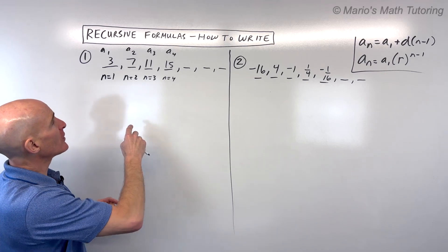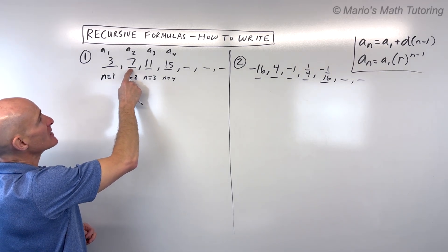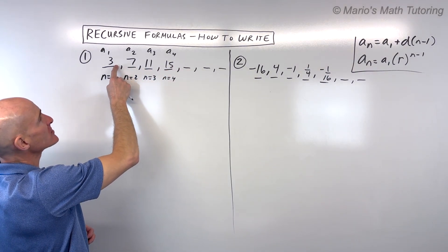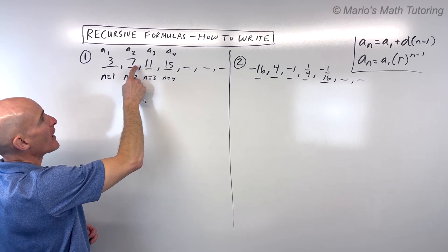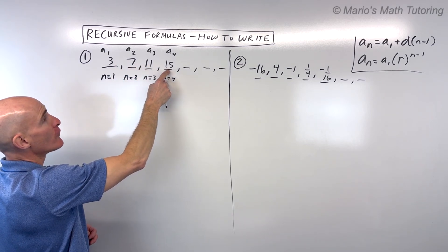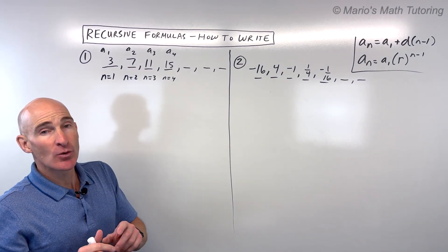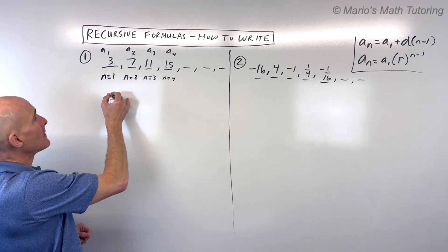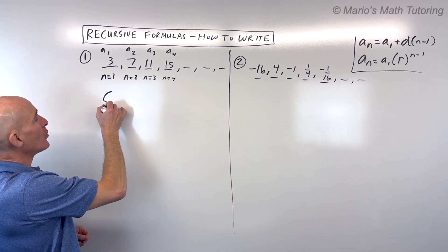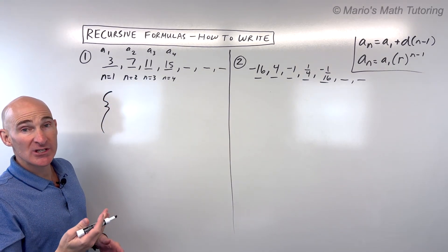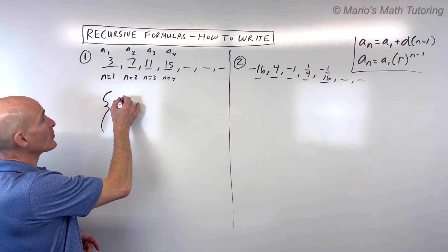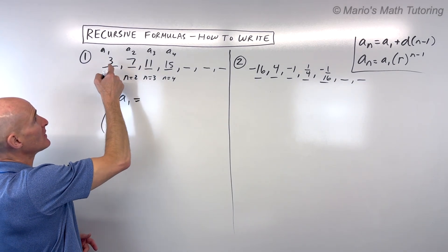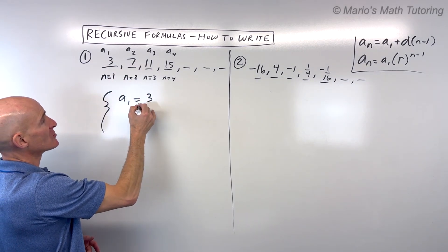What we're trying to figure out is how do I get to the next term, and then the next term, and then the next term. An explicit formula takes you right to that 100th term or that 200th term, whichever one you're looking for. A recursive formula is based on the previous term or the previous terms to get to that next term. So if we look at this pattern, you can probably see pretty easily how am I getting to the next term. Well, it looks like we're adding 4 each time. We're starting at a sub 1, the value of our first term, and that term is 3.